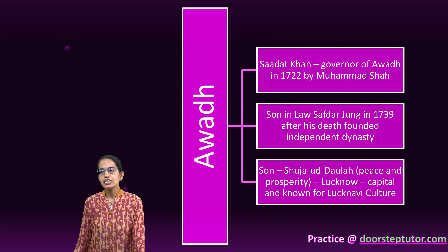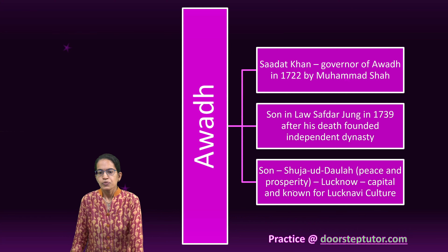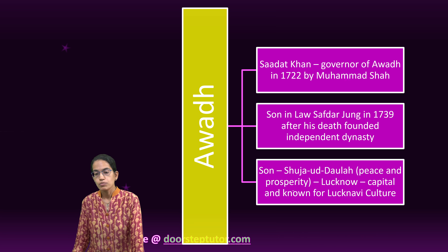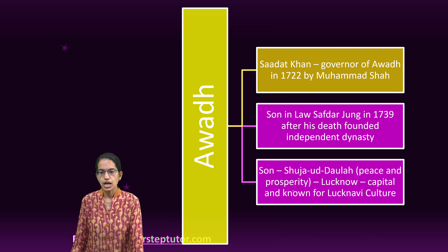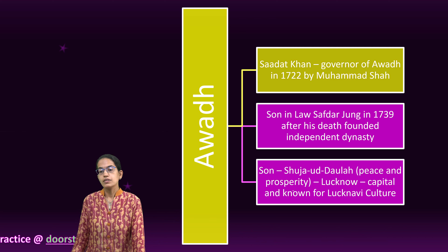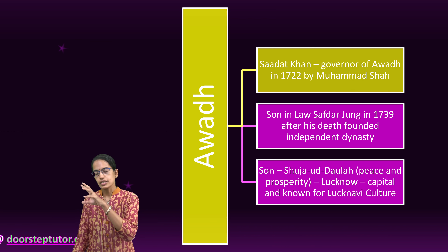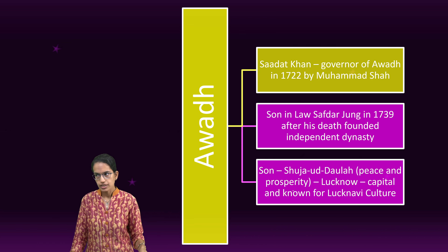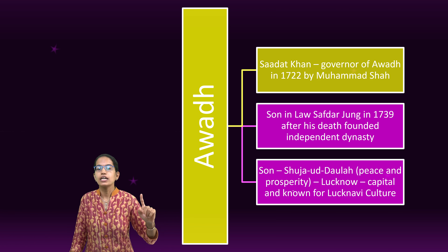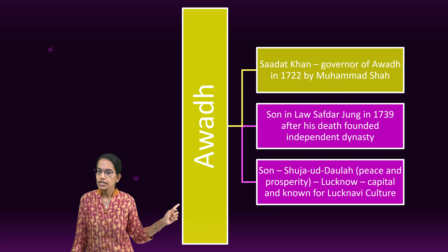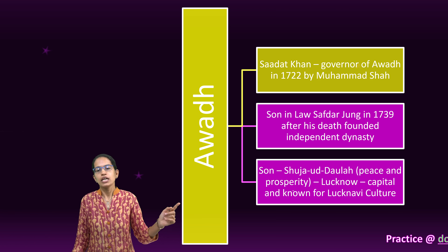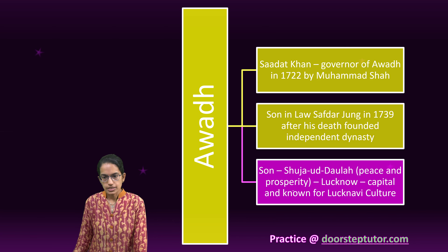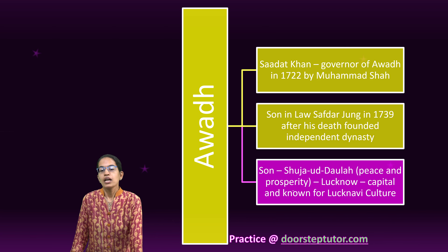The next is the region of Awad. Awad was under Sadat Khan. Muhammad Shah made Sadat Khan the governor, similar to how Chin Kilij Khan was appointed governor of Hyderabad by Muhammad Shah. Here again in Awad, Sadat Khan was appointed as the governor.